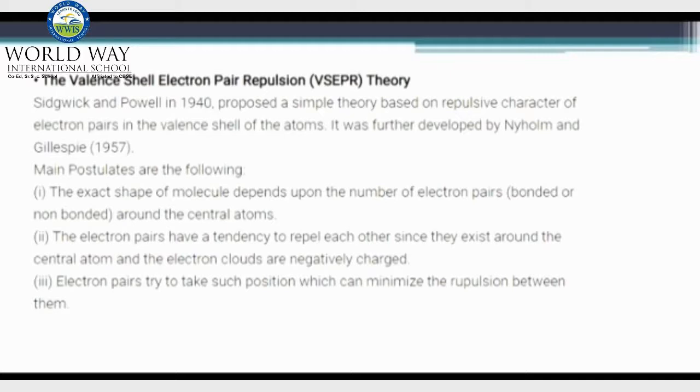Now the most important topic is the theory called VSEPR theory. A theory based on repulsive character of electron pairs in the valence shell of the atoms. The main postulates are covered as follows.